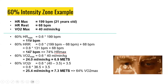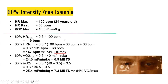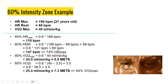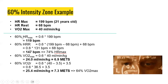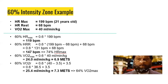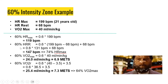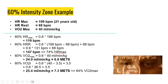Before moving on, I want to compare those two methods. The first method was a simple percentage of heart rate max; the second was the Karvonen method, the percentage of heart rate reserve. For the same 60% intensity, we got two different values: using percentage of heart rate max, we got 119 beats per minute for this client; but using the Karvonen method, we get a higher number — 147 beats per minute.